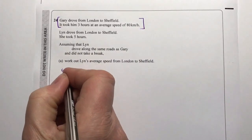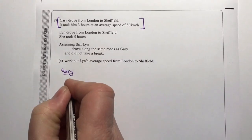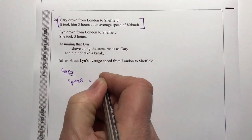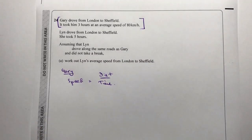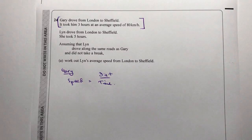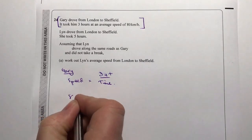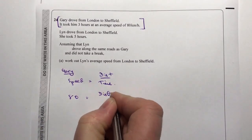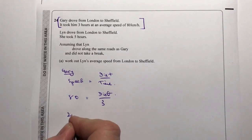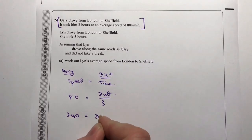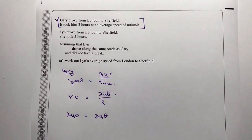Let's look at Gary's journey: speed equals distance over time. If you're not familiar with this, please make sure you are okay with these sorts of formulas, because you will come across these questions on a fairly regular basis. Gary's average speed was 80 km/h and the time was three hours. Multiplying across, the total distance Gary drove was 240 kilometres in total.